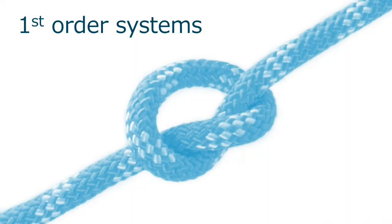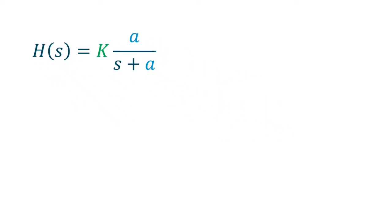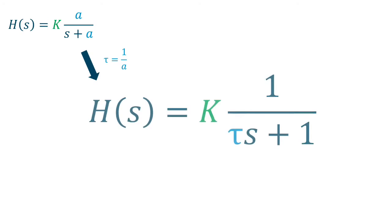Let us start with the basic first order system. This is the possible representation of a first order system without zeros. We have two parameters, a and k. A common representation, with a little more information, is this one defining tau, the time constant of the system.